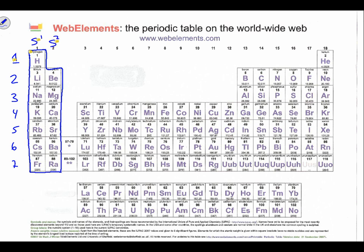If you recall from past lectures, we said that the first energy level holds a maximum of two electrons. If I look carefully, I have hydrogen and I have helium. I know helium is not in the S block like you'd expect, but since this one level only holds two electrons, we only have two elements.